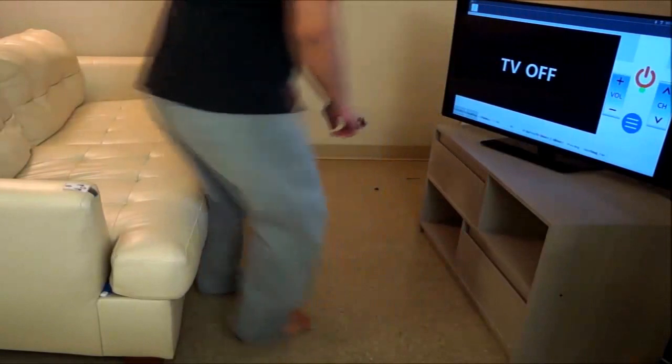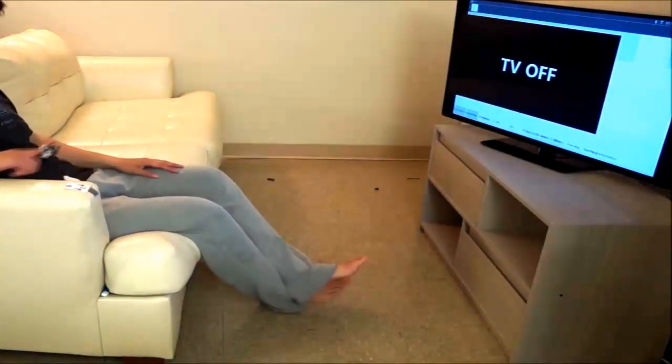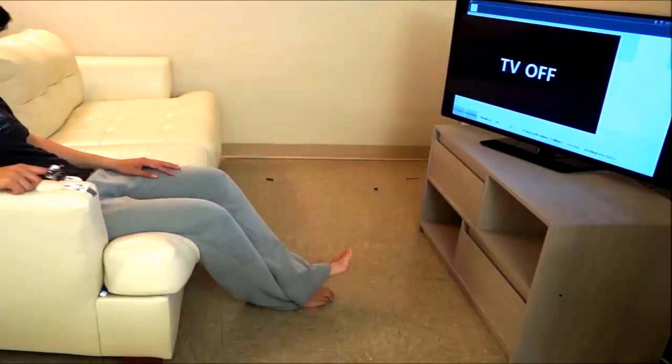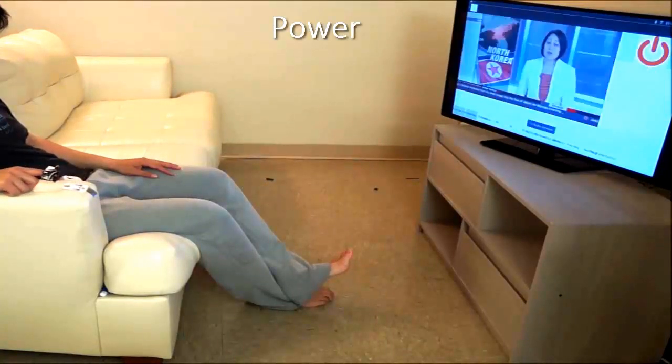Here a user controls a TV with the sofa. First, the user initiates interaction with a double tap. The user triggers a button function like power and channel up by a tap gesture.